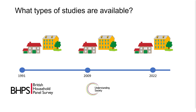The surveys typically cover a range of topics related to the household such as their economic status, demographic characteristics, health and wellbeing, and social and community engagement. The advantages of a household panel study include the ability to track changes in households and their members over time, the ability to examine relationships between variables at different levels such as individual, family, and geographic region, and the potential for more in-depth analysis of specific sub-groups of interest. Perhaps the best example of a household panel study in the UK is Understanding Society, which will be covered in depth by Mark in the next talk.